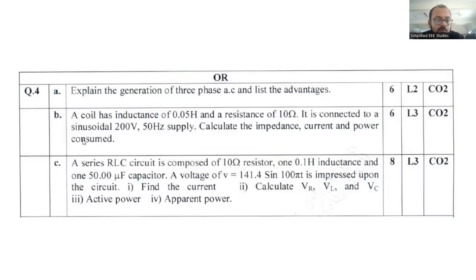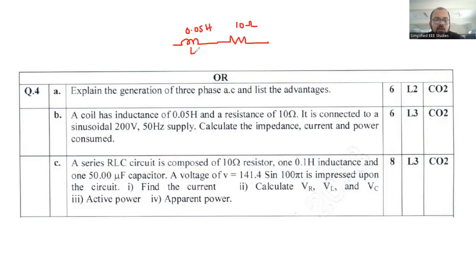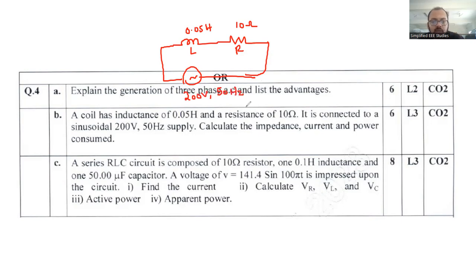Question number 4B is a numerical example. A coil has an inductance of 0.05 Henry and a resistance of 10 ohm — basically an RL circuit — which is connected to a 200 volt, 50 hertz AC supply. Calculate the impedance.